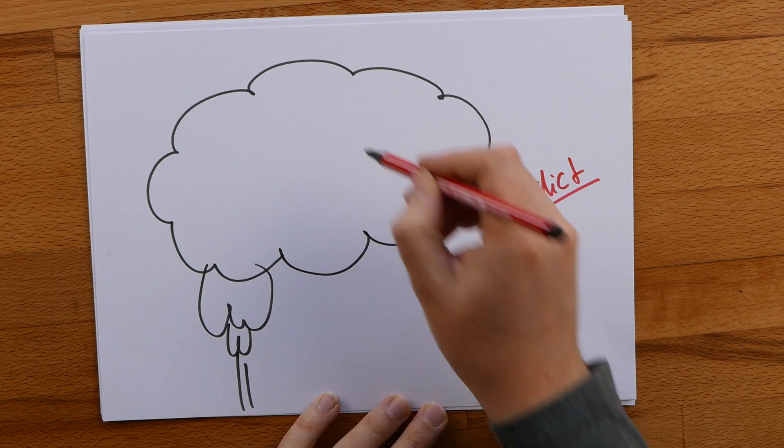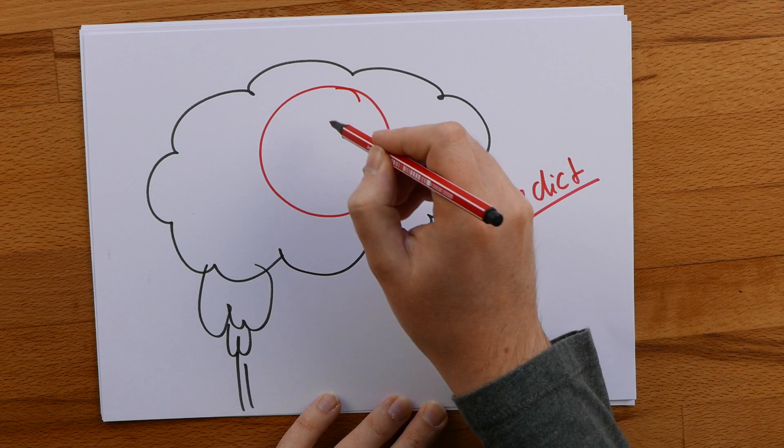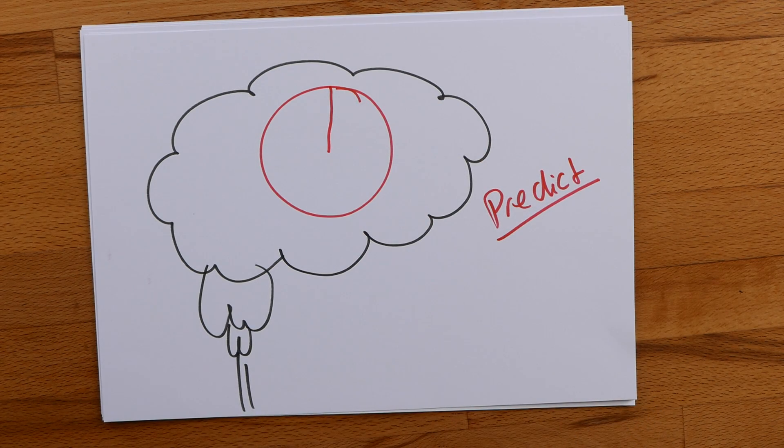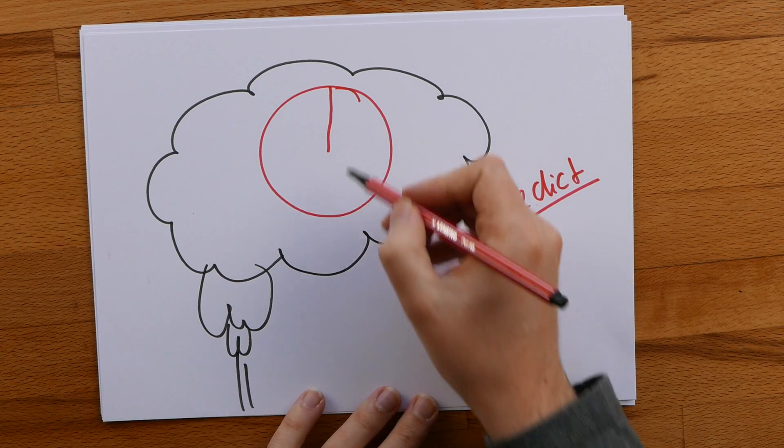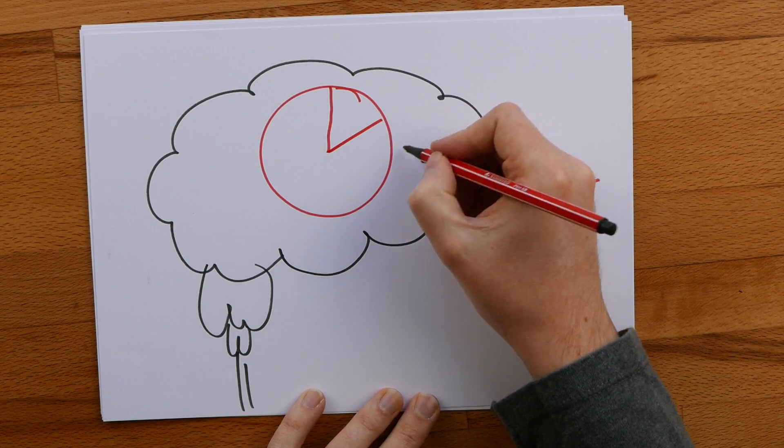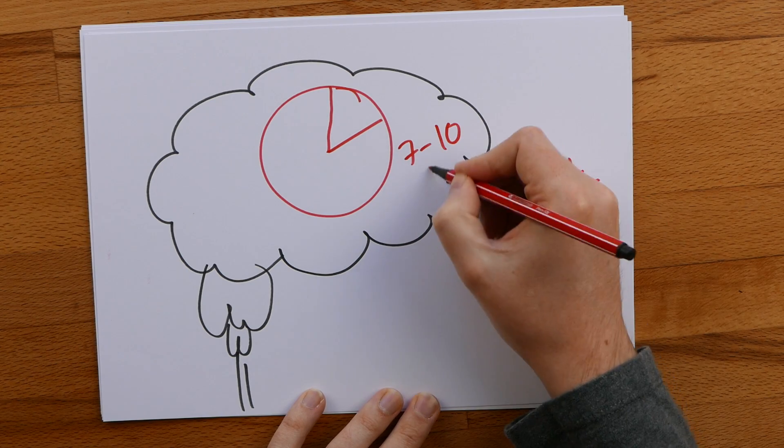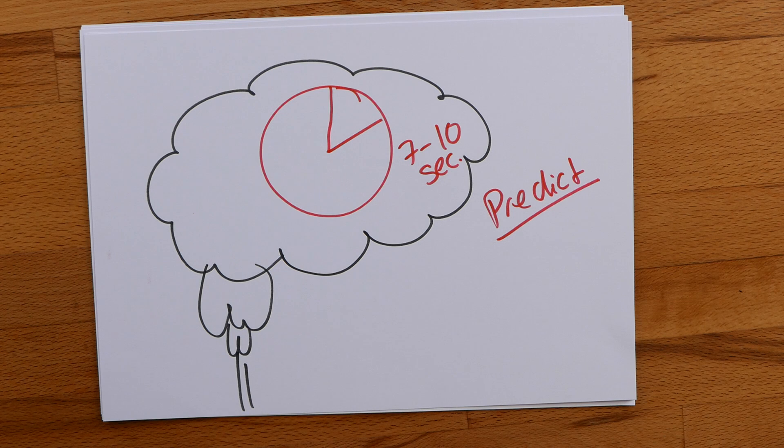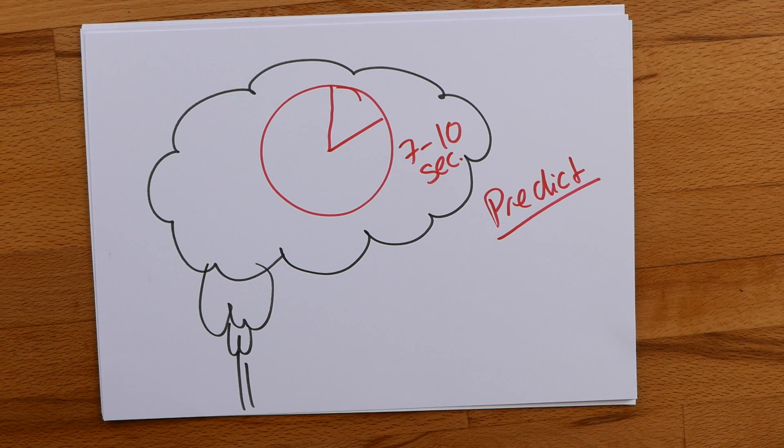Not only can we predict them, if this is a clock, we can predict them before the person makes them consciously. How many seconds do you think we can predict a decision before you consciously make one? The answer is about 7 to 10 seconds. Your subconscious mind has already done it.